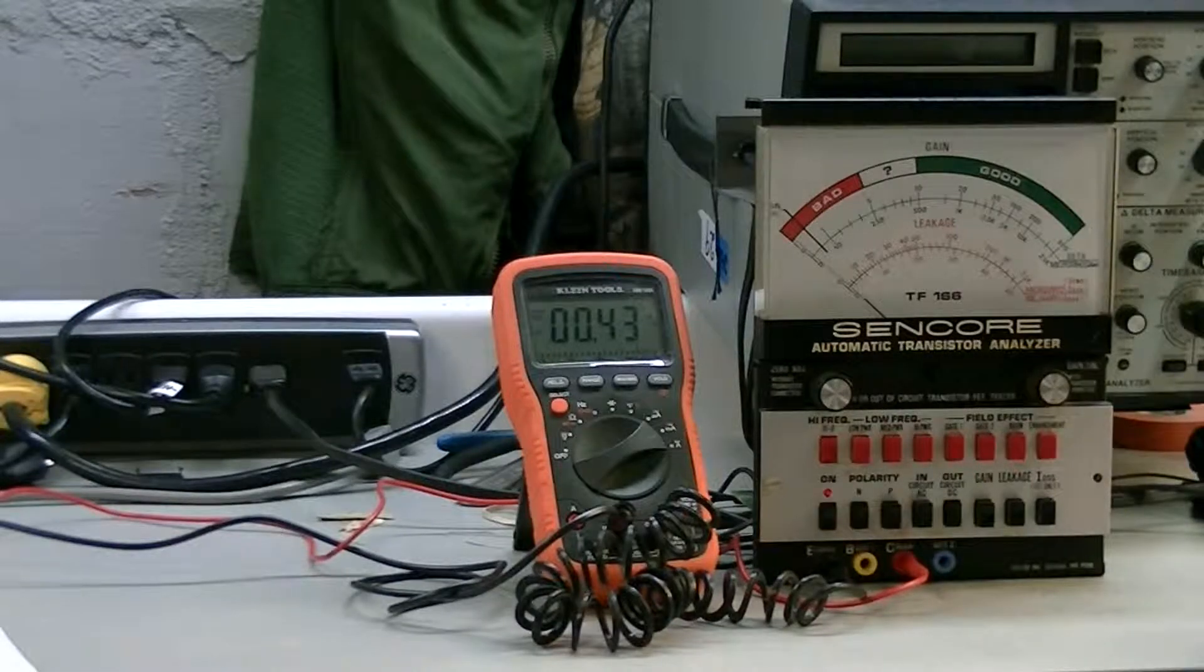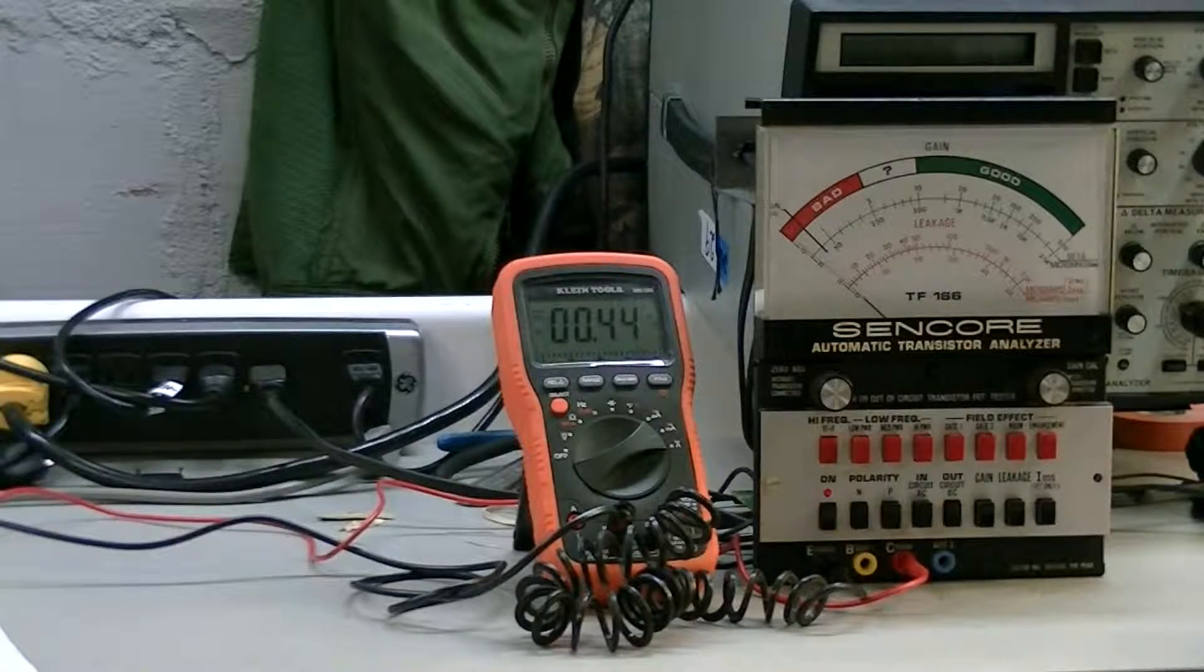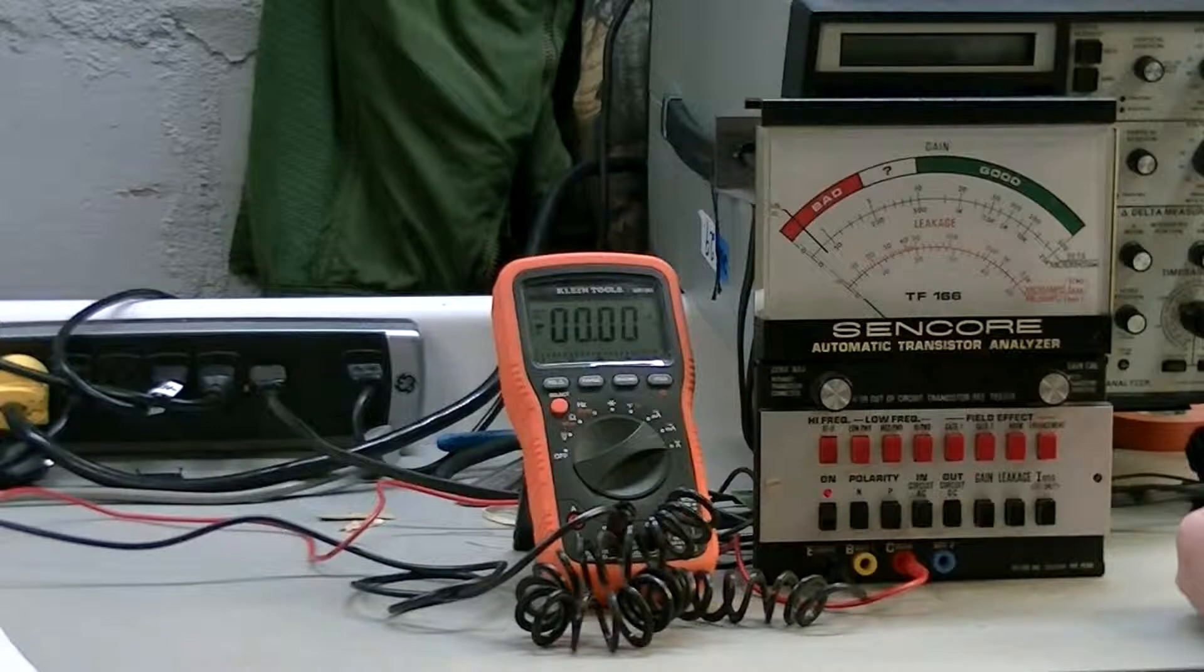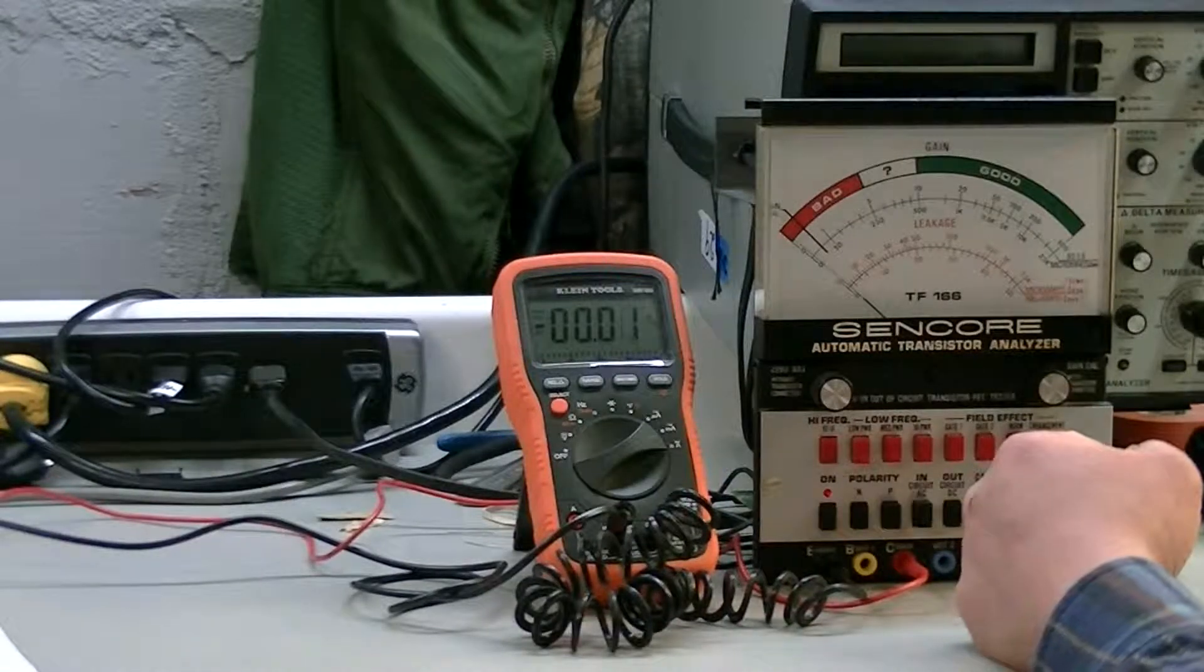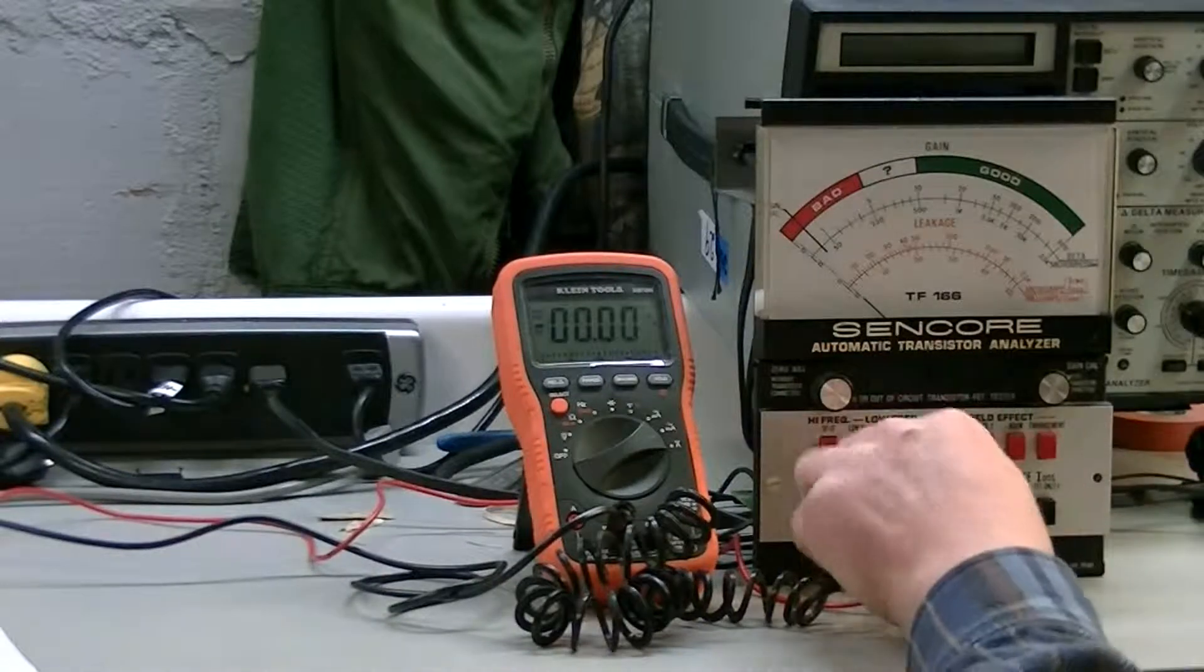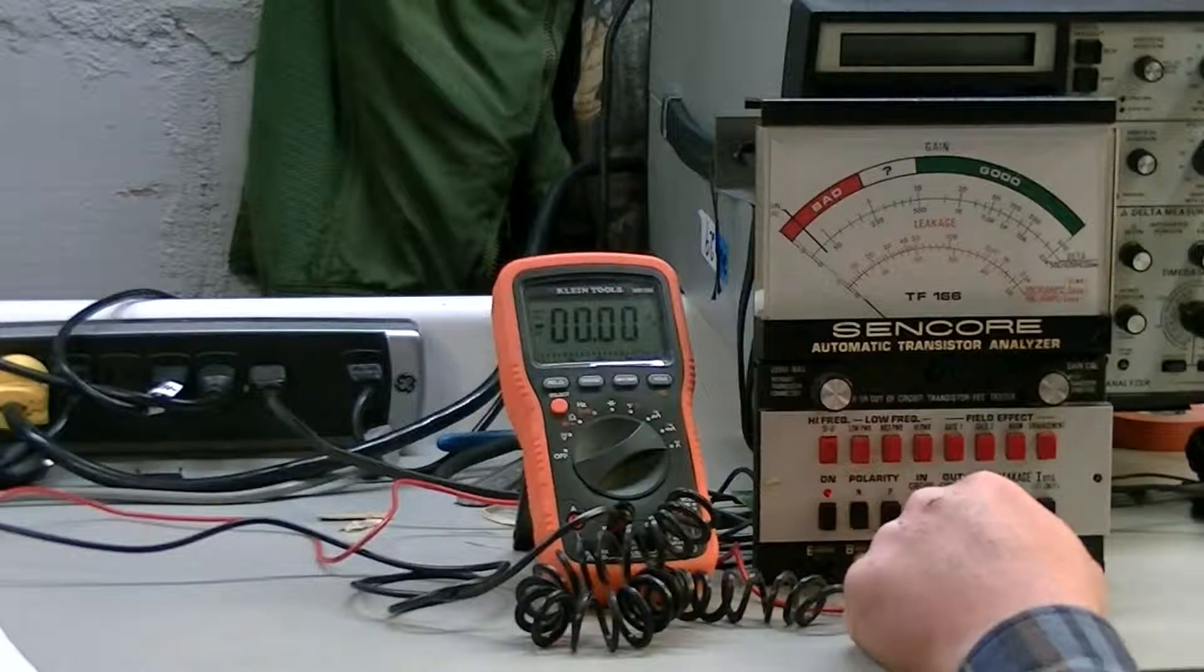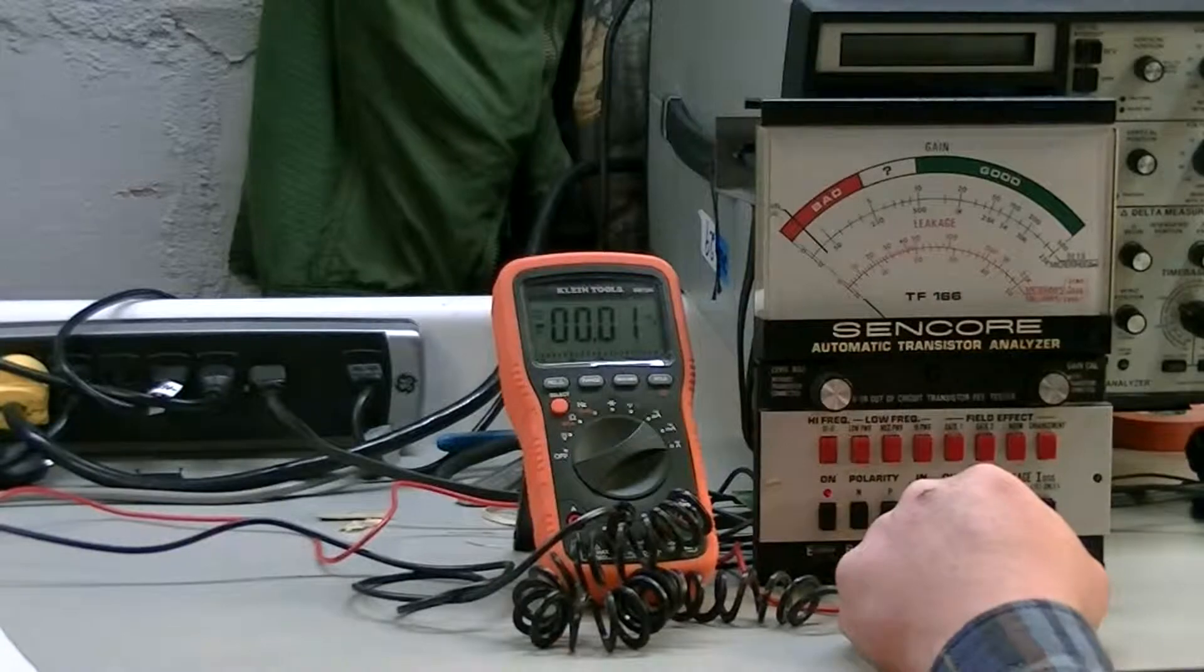Anyways, let's see, I'm supposed to turn the gain control fully counterclockwise and connect the milliammeter which I have already. Positive lead to the collector and the negative lead to the emitter. So that's what we've got.